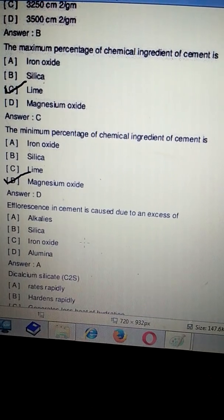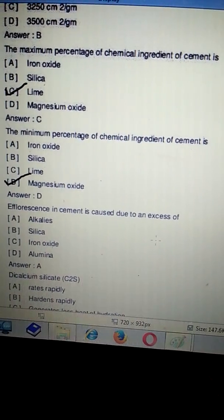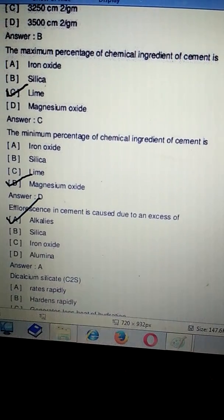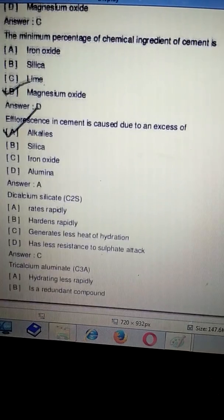Efflorescence in cement is caused due to the excess of alkalis. This is a very important question. Next question.